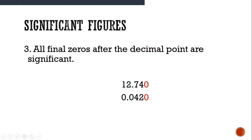All final zeros after the decimal point are significant. So in other words, here we would have 1, 2, 3, 4, 5 significant digits in 12.740. But we would only have 1, 2, 3 significant digits in 0.0420.